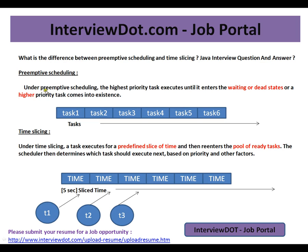Preemptive scheduling means the highest priority task executes until it enters the waiting or dead state, or another higher priority task comes into existence. So a particular task that has been picked up will keep running until it is completed or enters a waiting or dead state, and then the other task will be picked up.